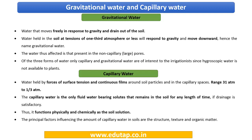Let us quickly revise the three kinds of soil water. First, gravitational water — it moves freely in response to gravity and drains out of the soil; it does not stay long in the macropores. The force holding this water is one-third atmosphere or less, which is why it easily comes under the influence of gravity and drains out.